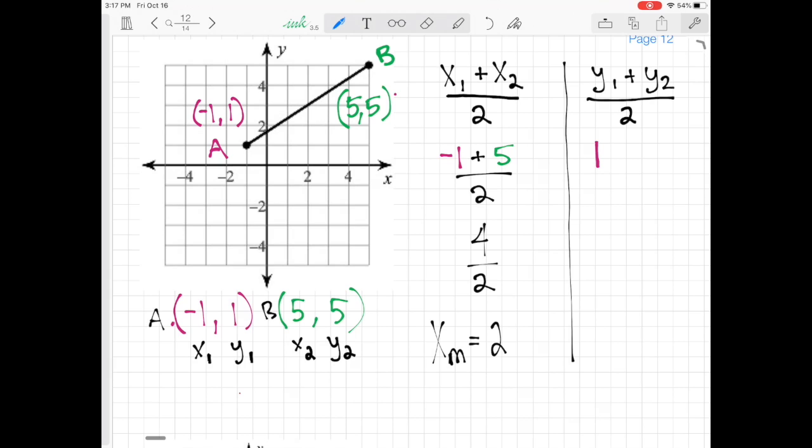y1 is 1, and y2 is 5. Then I'm going to add them together and divide by 2. So 1 plus 5 is 6, divided by 2. 6 divided by 2 is 3. So the y-coordinate of my midpoint is 3.